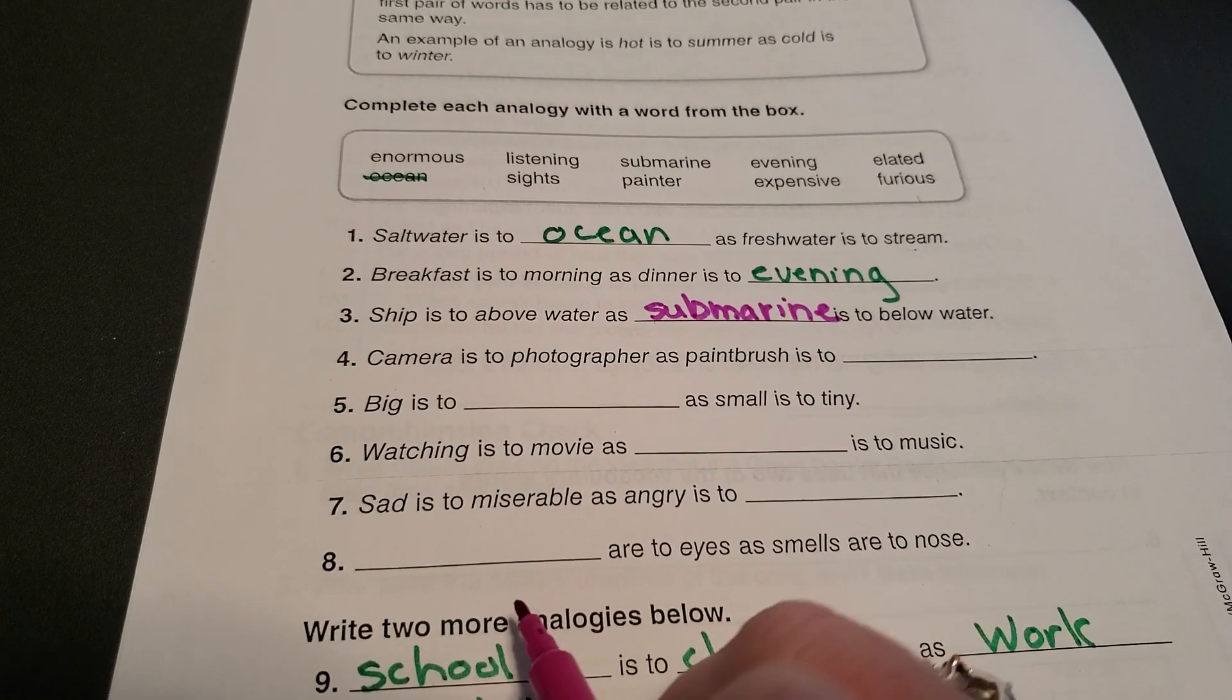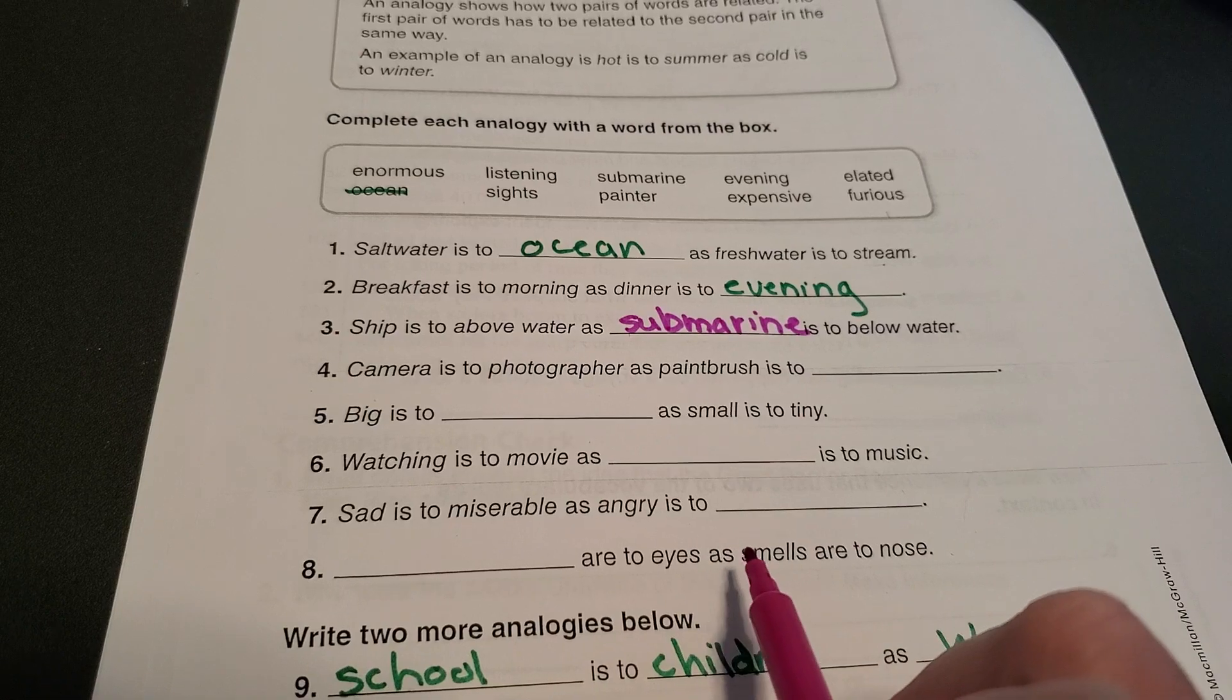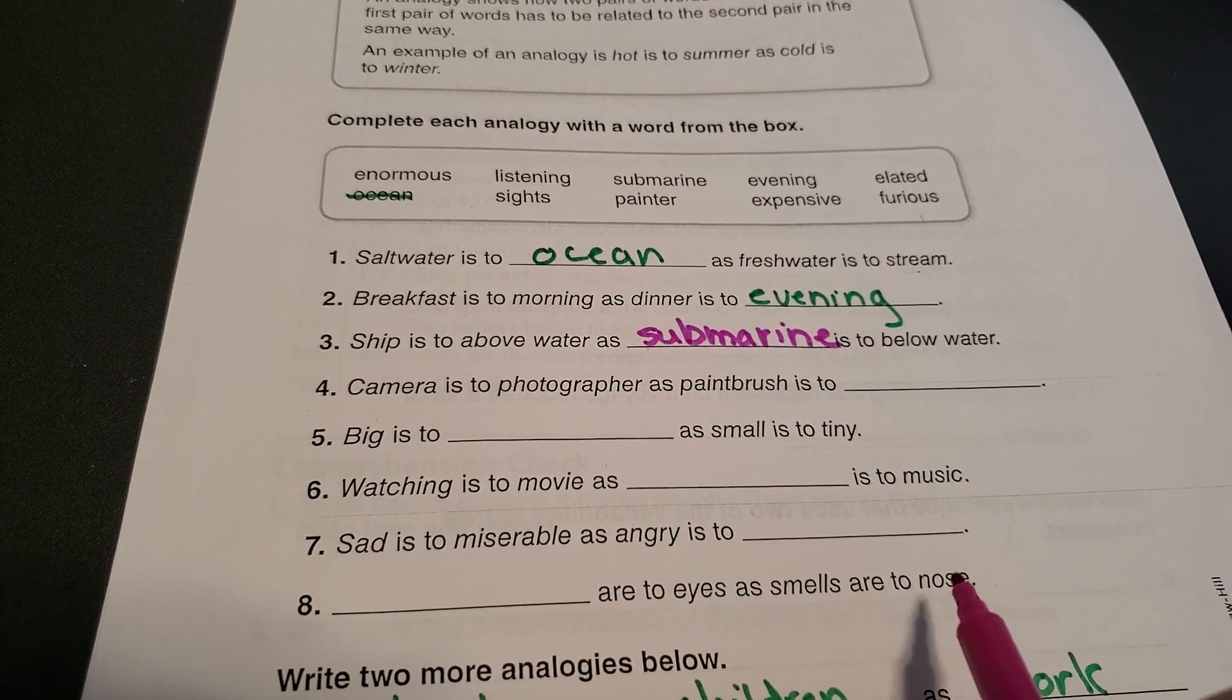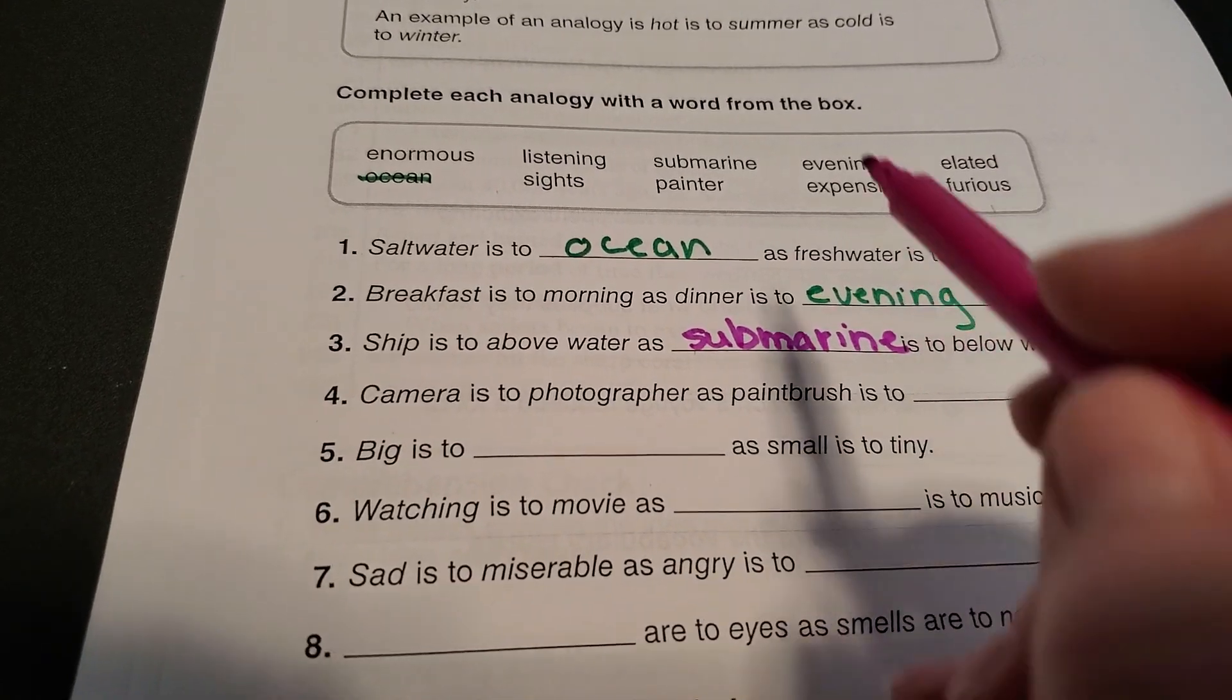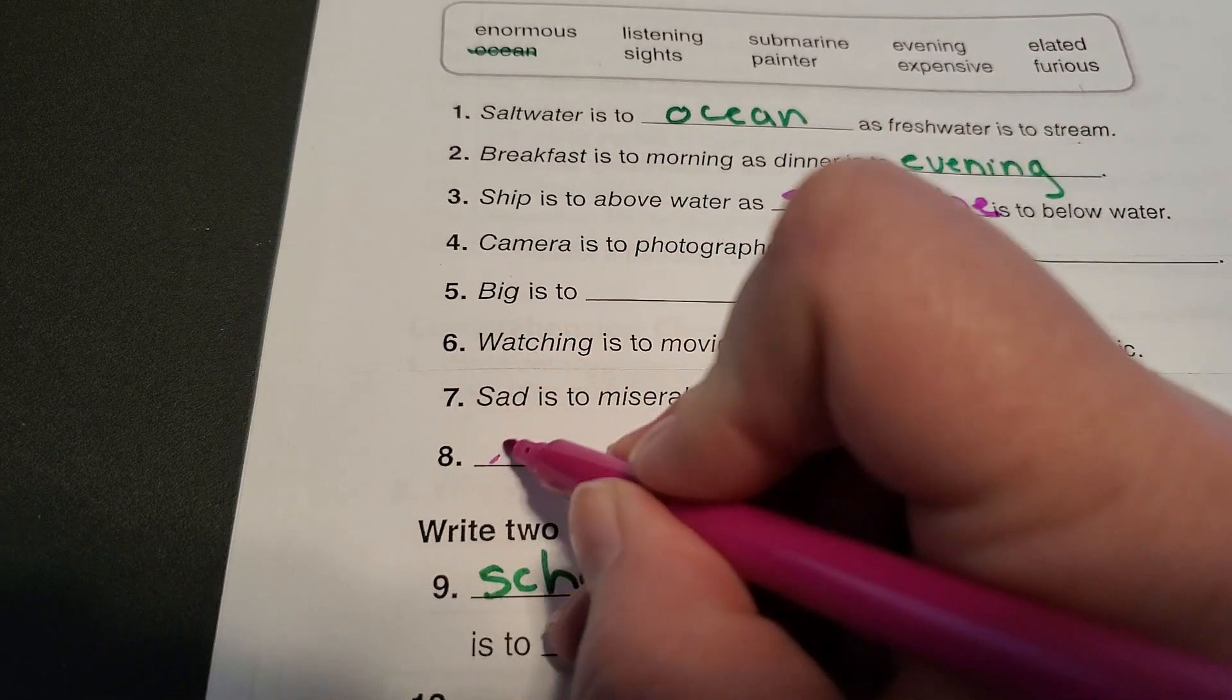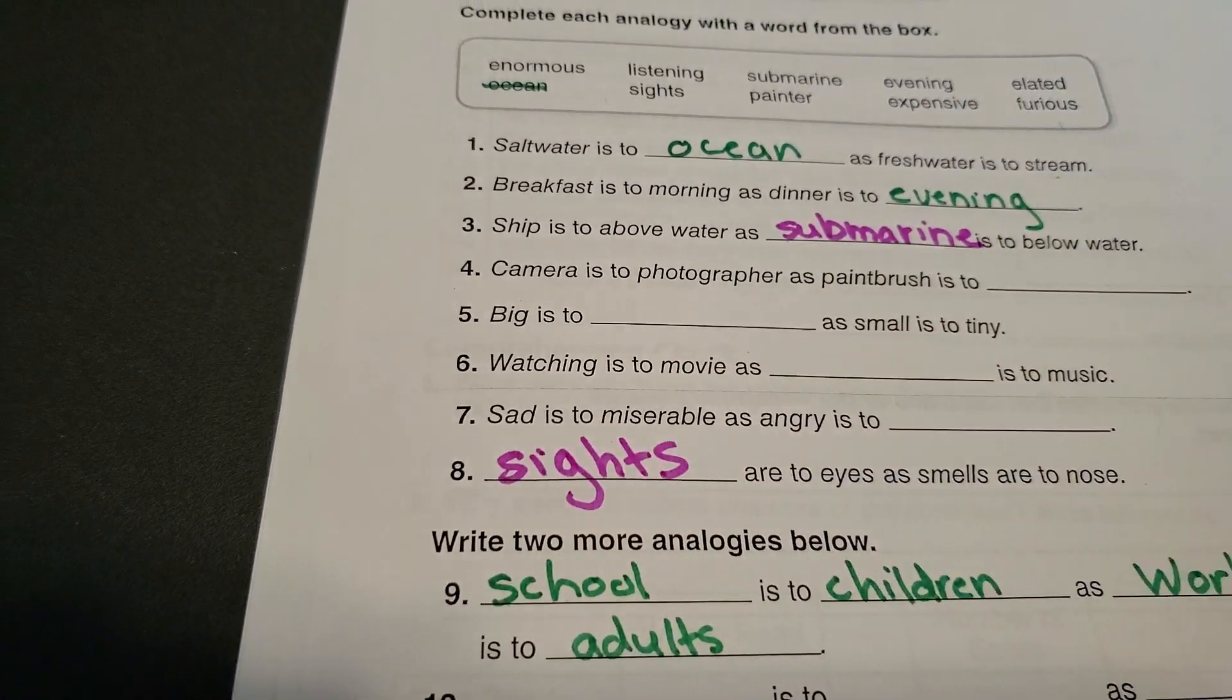I'm going to skip down to number eight. Blank are to eyes as smells is to nose. Okay, so we've got smells. Smells are going with nose. What do eyes do? Let's look back up here. Sights. If you got sights, perfect. Good job.